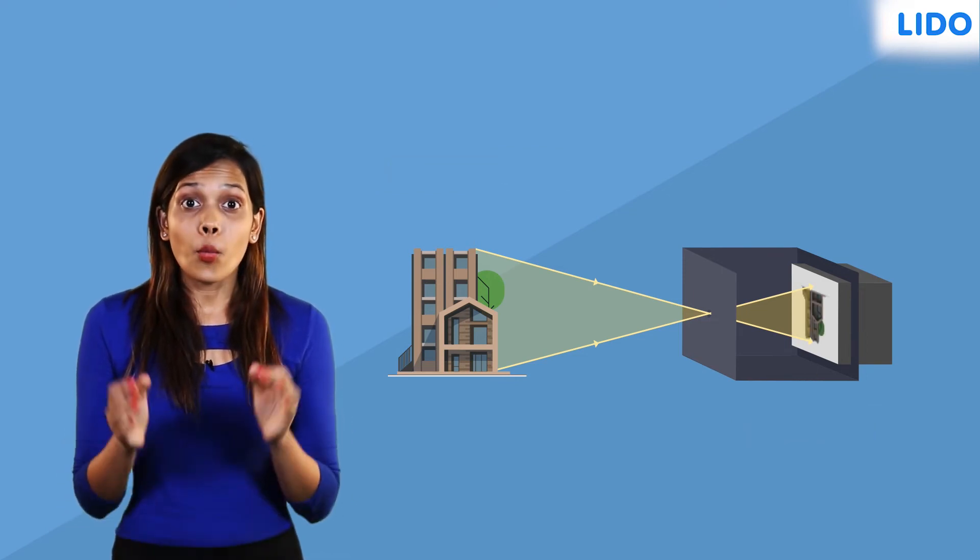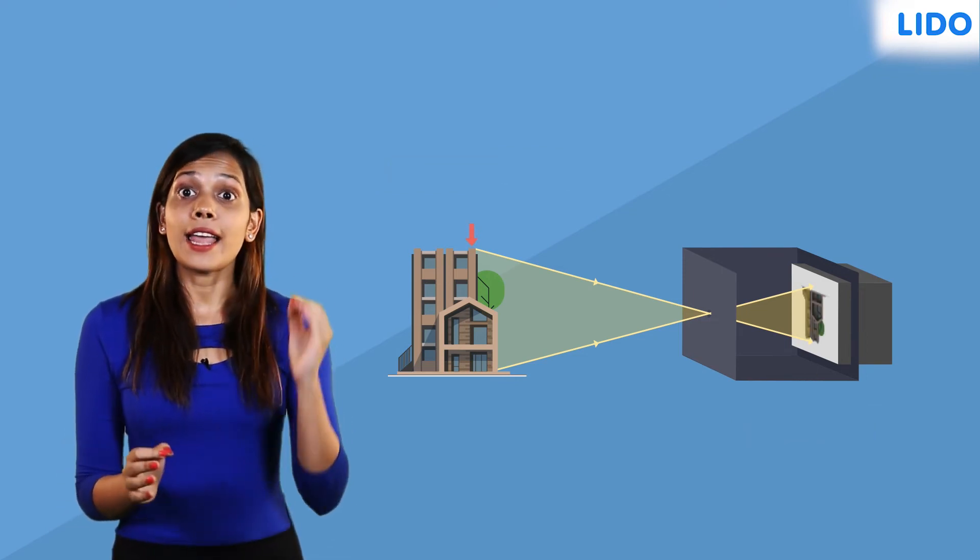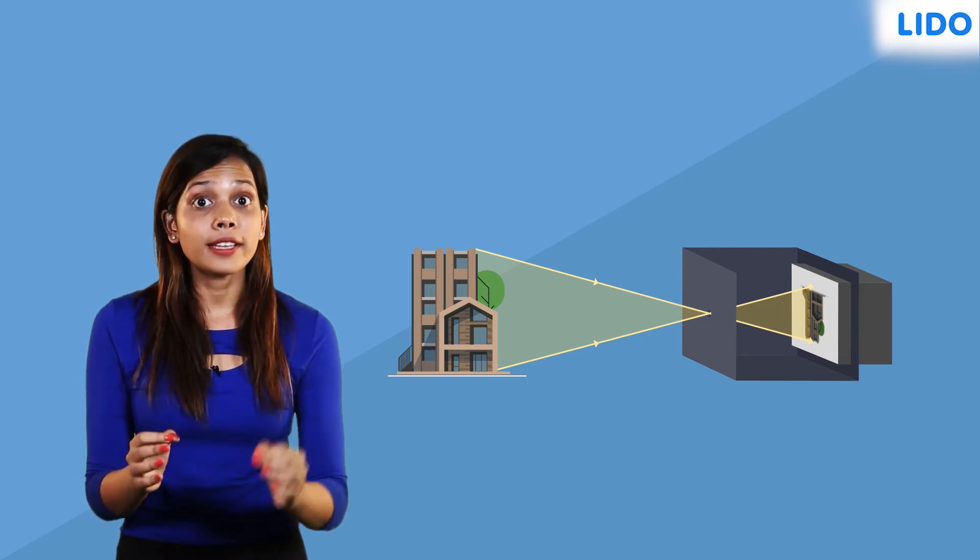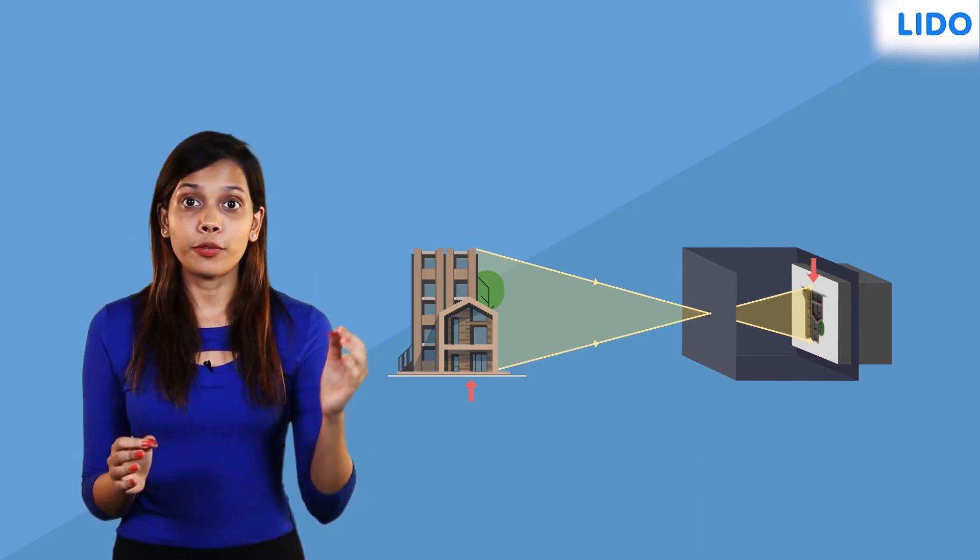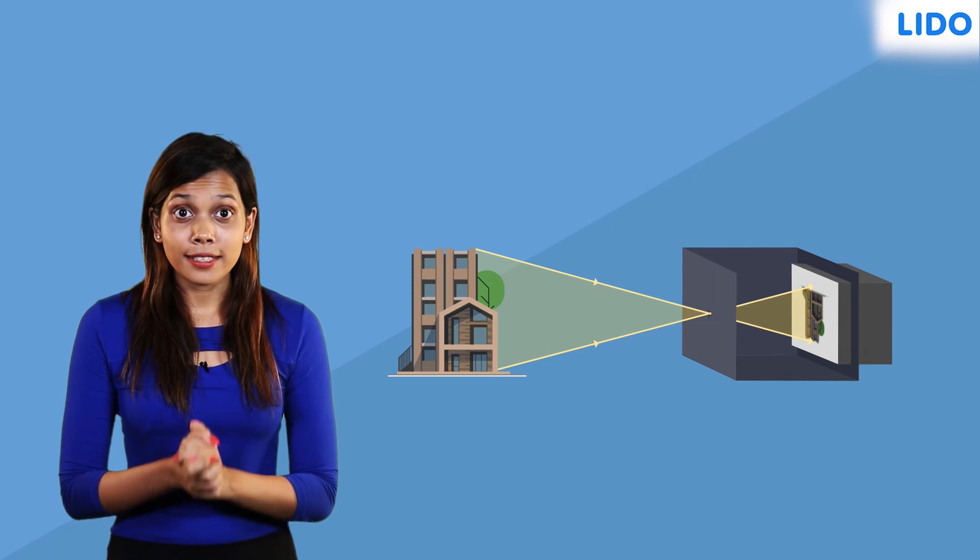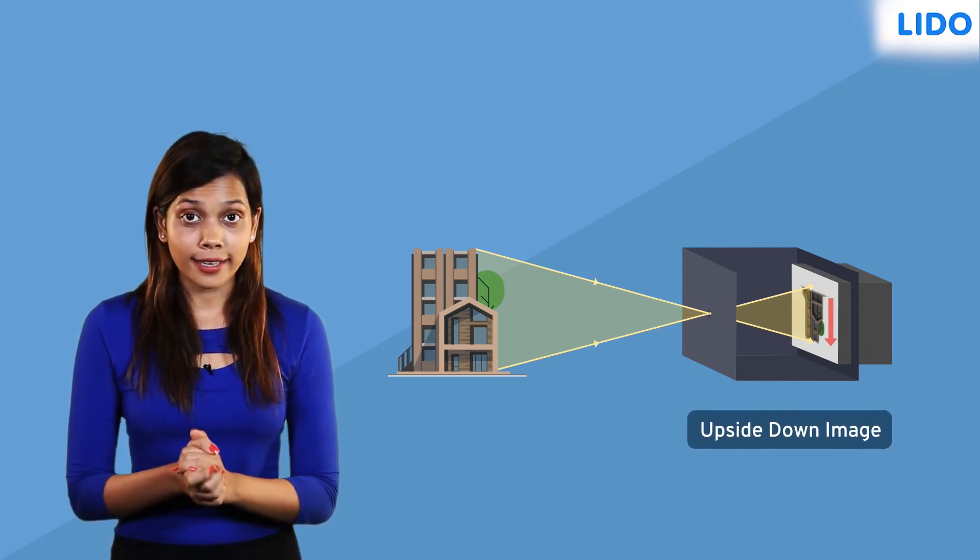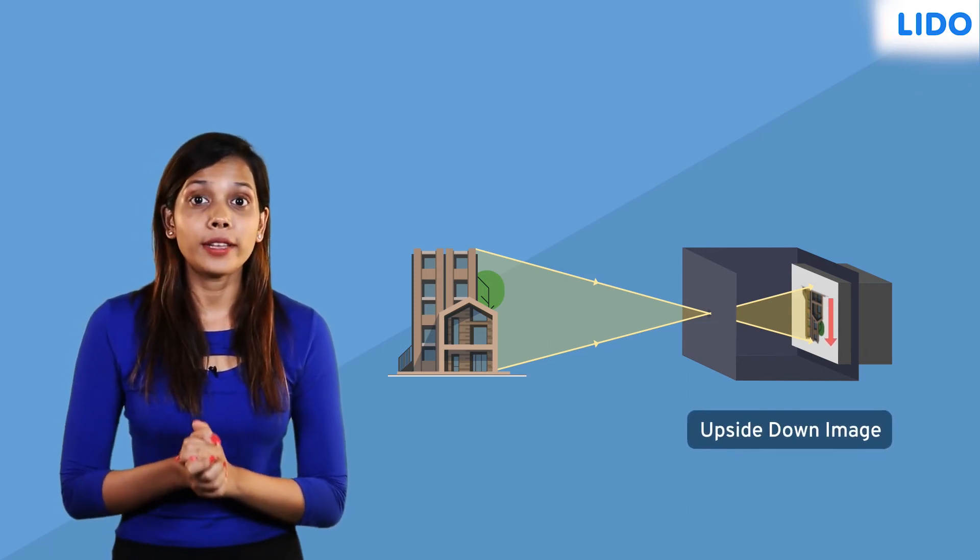Hence, what is at the top is seen at the bottom of the image and what is at the bottom is seen at the top of the image. This creates a smaller upside down image of the object that can be seen through the pinhole camera.